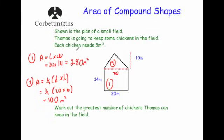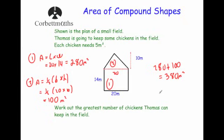The total area of the field is 280 plus 100, which equals 380 meters squared. Now we divide by 5 because each chicken needs 5 meters squared, so we calculate 380 divided by 5.